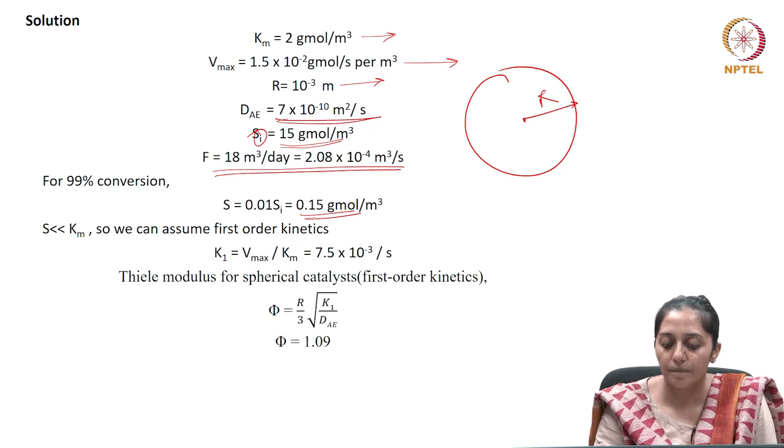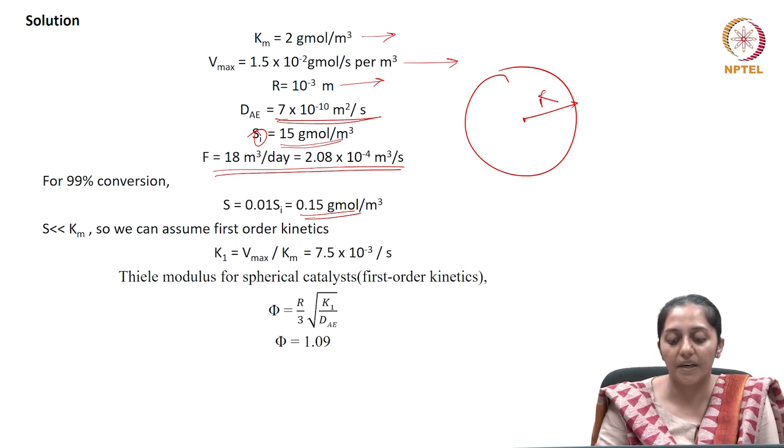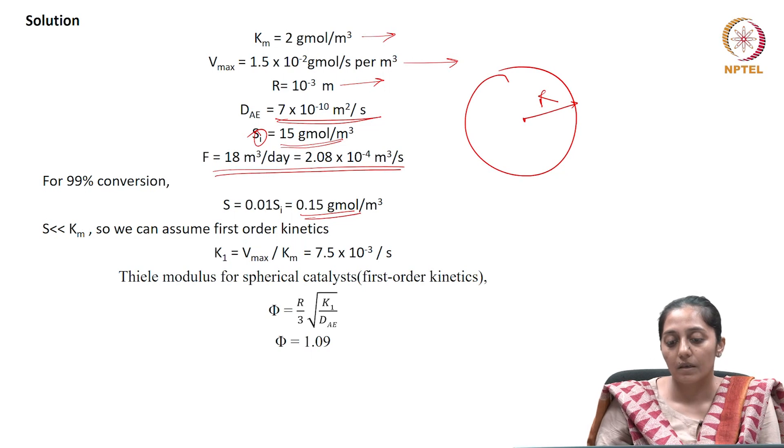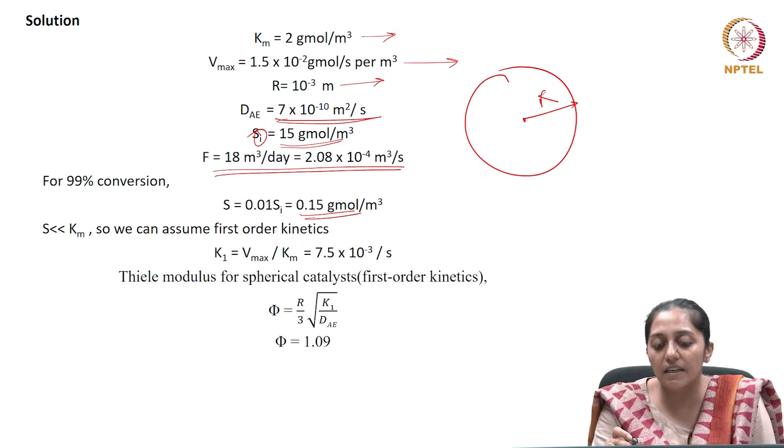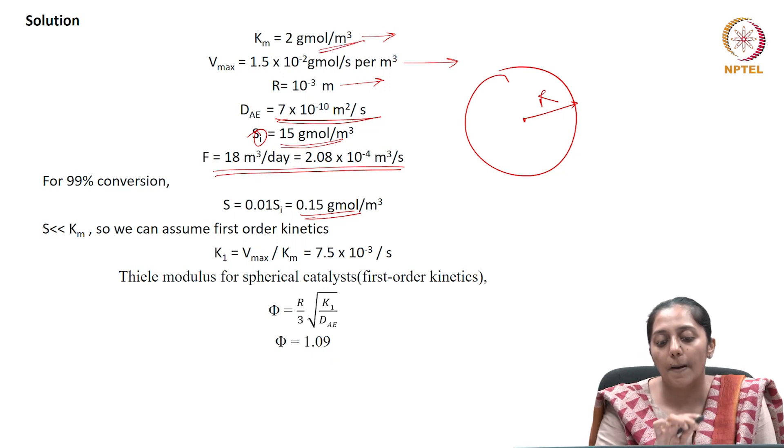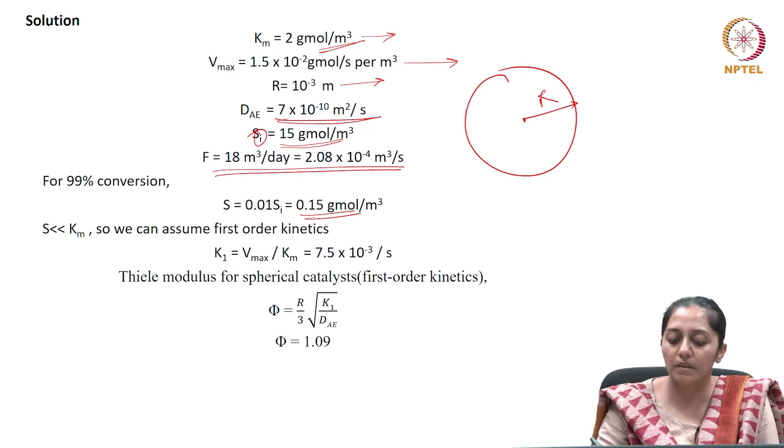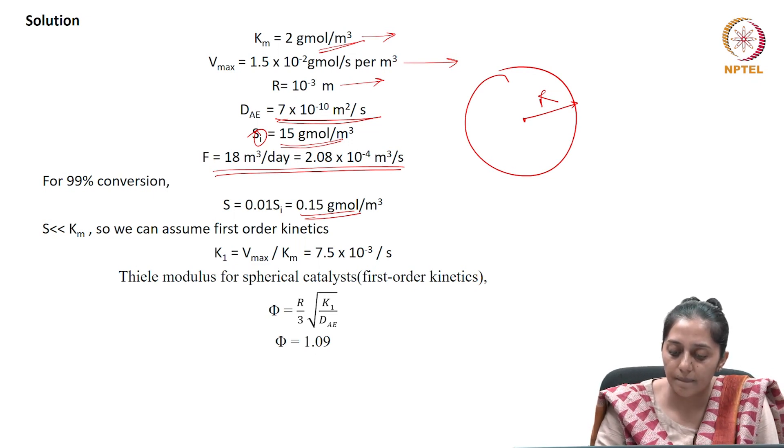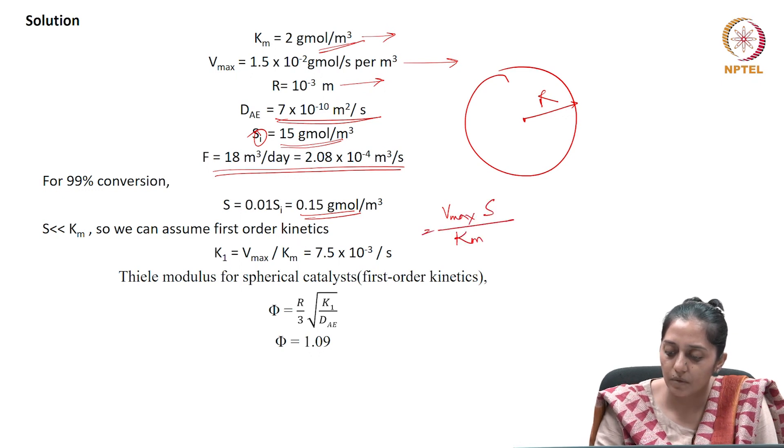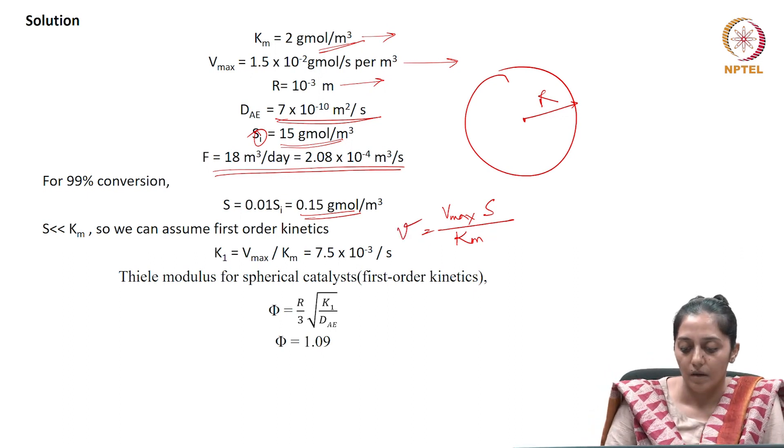Notice that the substrate concentration in the reactor is very low compared to the Michaelis-Menten constant value. We can assume first-order kinetics, so Rv = Vmax·S/Km.